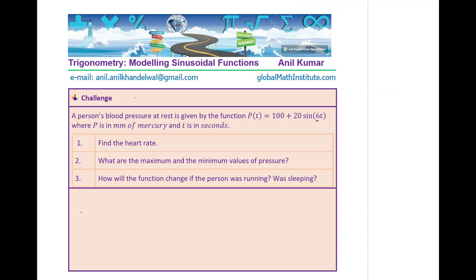Here is the solution for the first question. A person's blood pressure at rest is given by p(t) = 100 + 20 sin(6t), where p is in millimeters of mercury and t is in seconds. The three parts are: find the heart rate, find the maximum and minimum values of pressure, and how the function changes if the person is running or sleeping. The function is p(t) = 100 + 20 sin(6t).